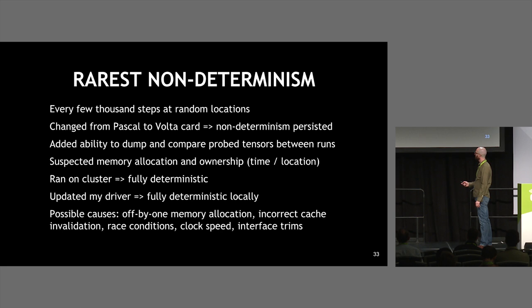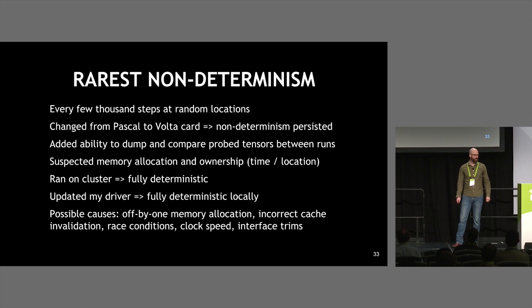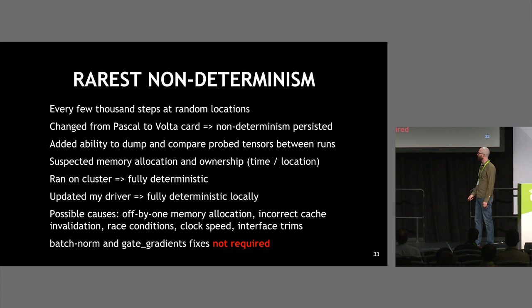There were all kinds of possible causes — interface trims, clock speeds, various things. I have no idea what specifically caused it, but there was a lurking driver bug which people were presumably training massive models with and getting some extra regularization from. It turned out the batch norm and gate gradients solutions were not required — they were just exacerbating other issues and could be disabled.